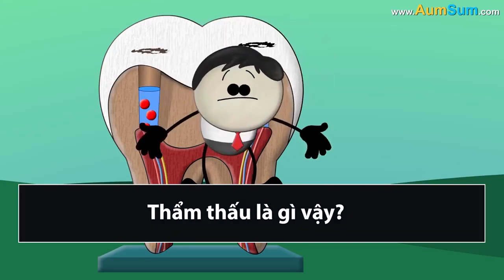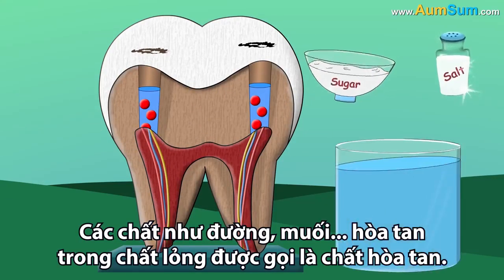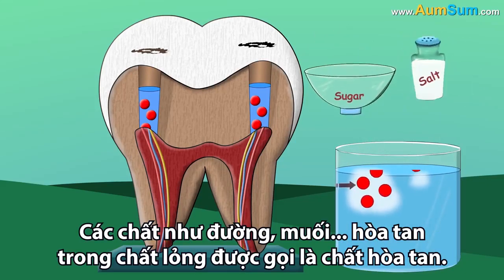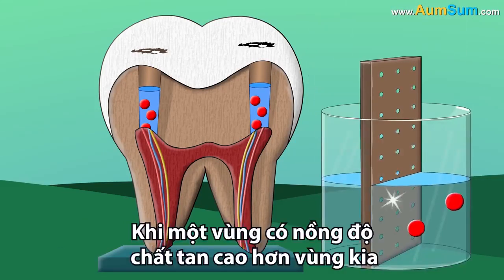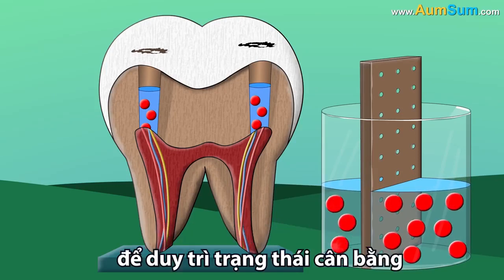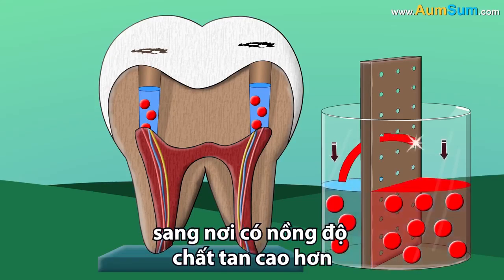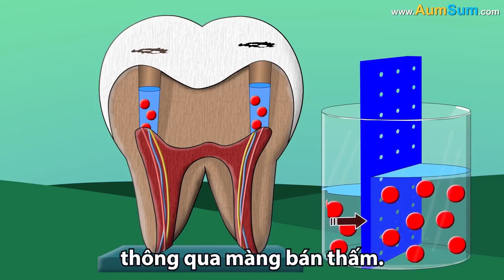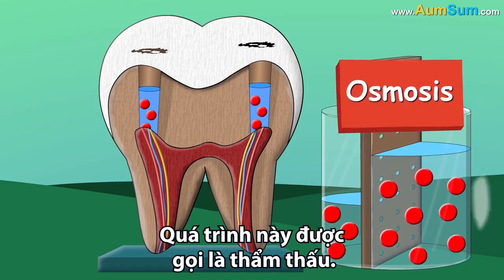What's that? Substances like sugar, salt, etc. that dissolve in liquids are called solutes. When a region has higher solute concentration than the other, then to maintain equilibrium, water moves from lower solute concentration to higher solute concentration through a semi-permeable membrane. This process is called osmosis.